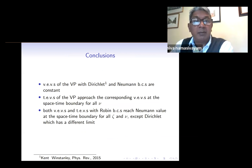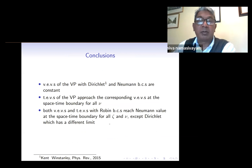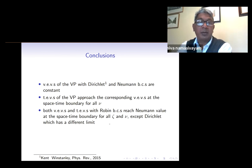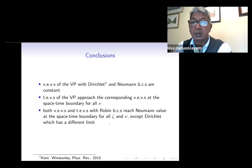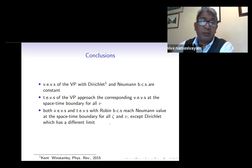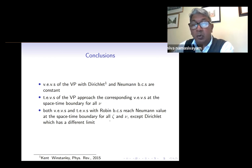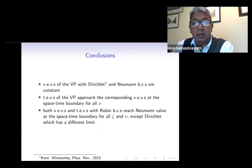In summary, we have shown that the vacuum expectation values of the vacuum polarisation with Dirichlet and Neumann boundary conditions are constant and respect the background symmetry of the ADS spacetime. We have found that the thermal expectation values approach the corresponding vacuum expectation values at the spacetime boundary for all nu. With Robin boundary conditions, both the vacuum and thermal expectation values reach the Neumann value at the spacetime boundary for all Robin parameters considered and all nu, except for the Dirichlet case which has its own limit.